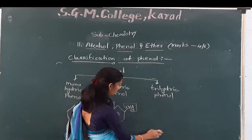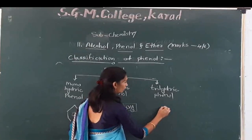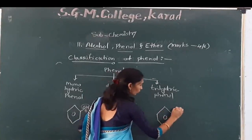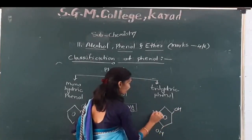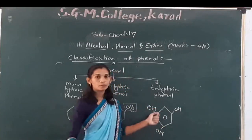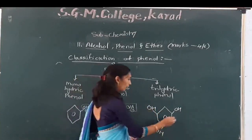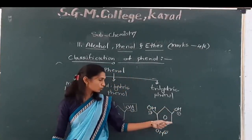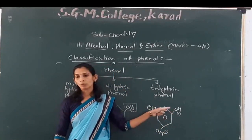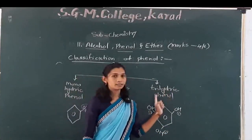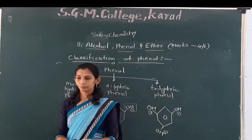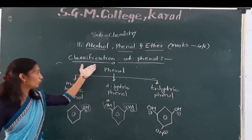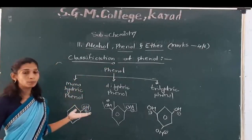And trihydric phenol: our benzene ring with the functional group OH attached — one, two, and three times. Three functional groups are attached, so that type of compound is known as trihydric phenol. Now depending upon this we discussed the classification of phenol as well as the classification of alcohol.